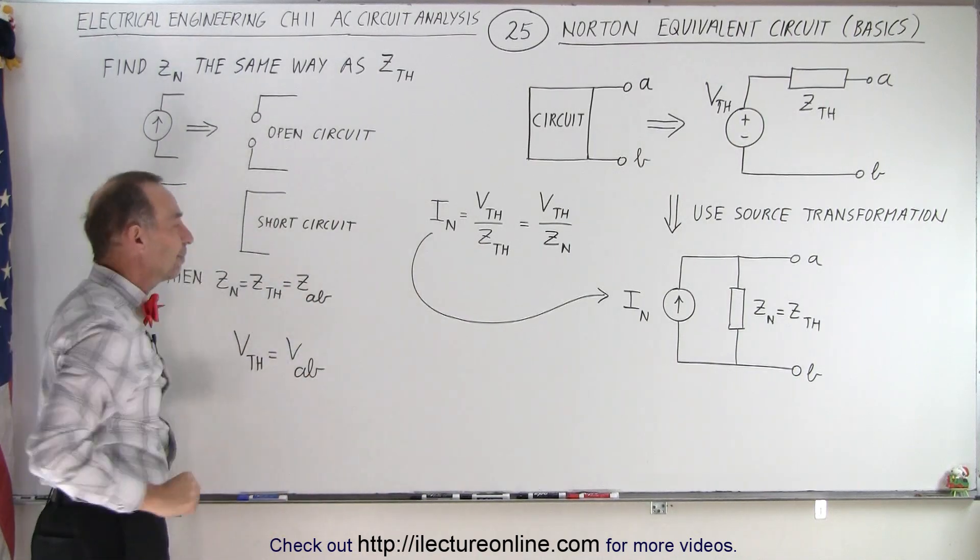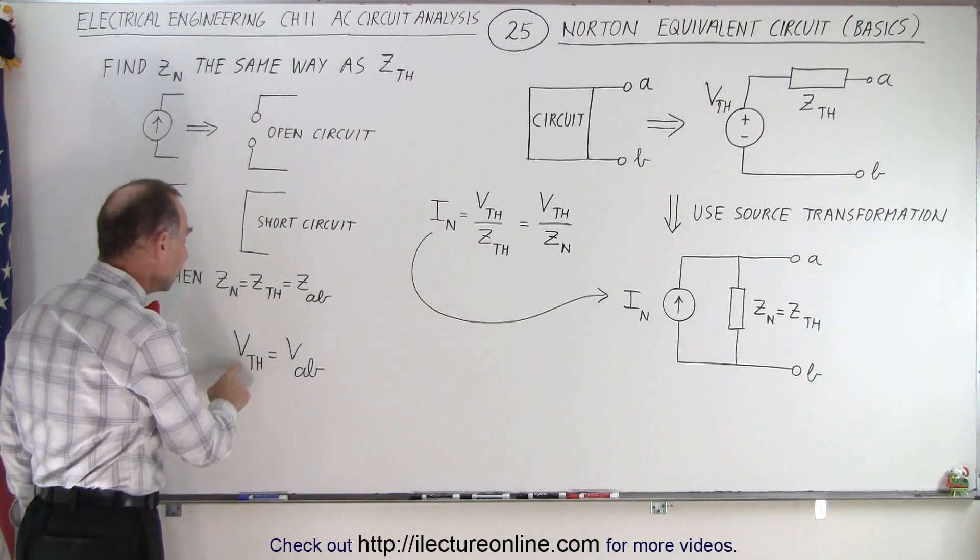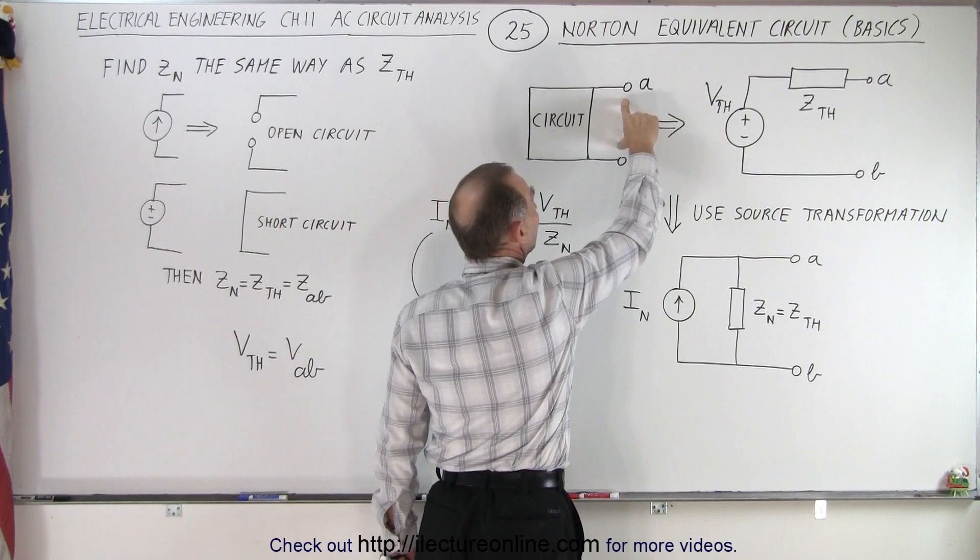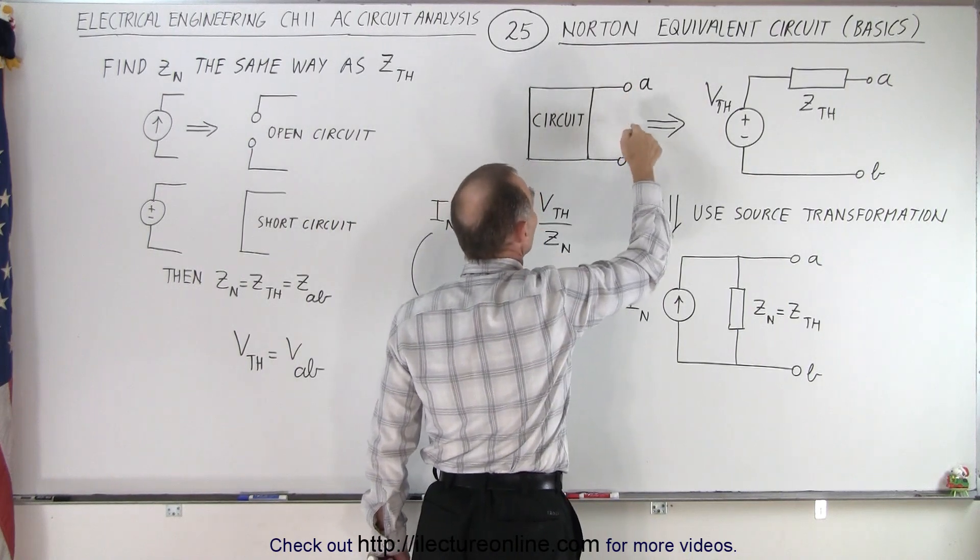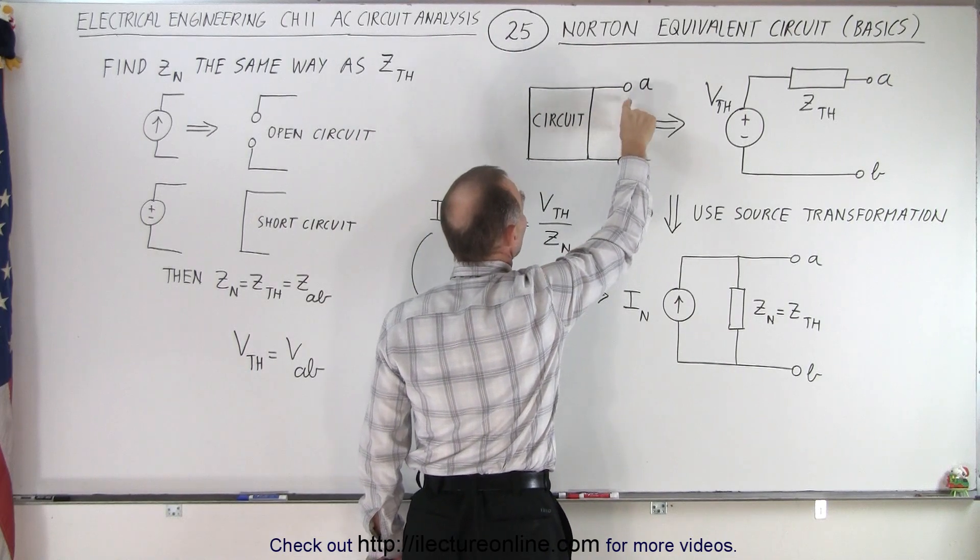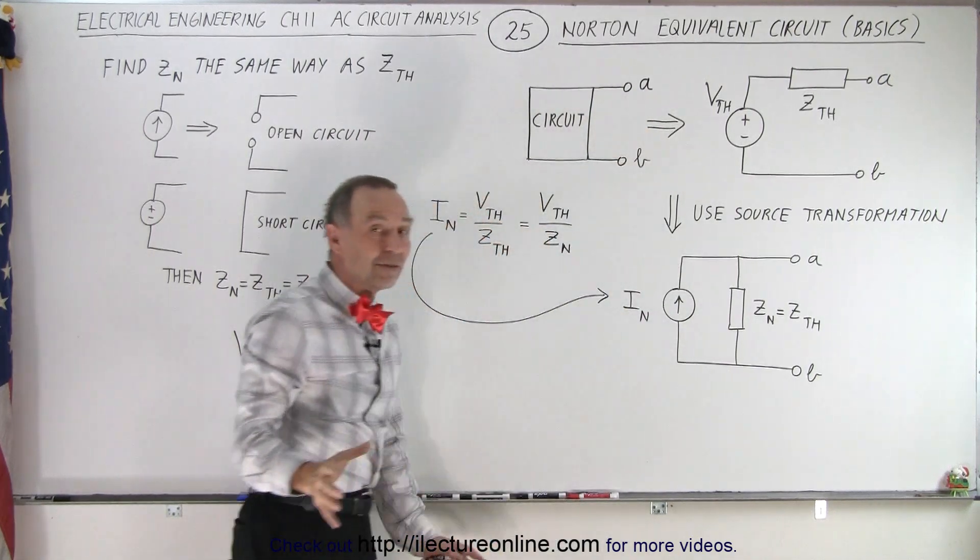Then to find the Thevenin voltage, you find the voltage across A and B with no load connected to it. Simply restore the circuit to what it was before, find the voltage from A to B, and that becomes your Thevenin voltage.